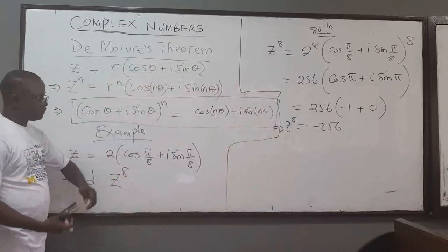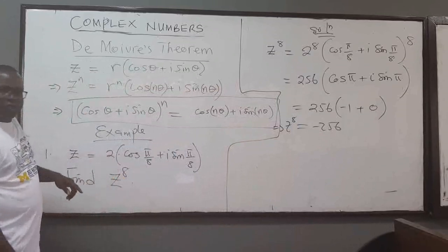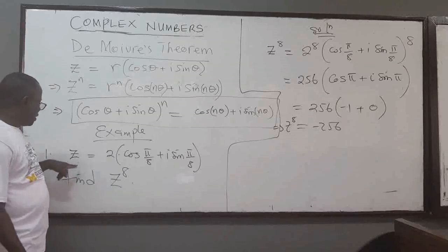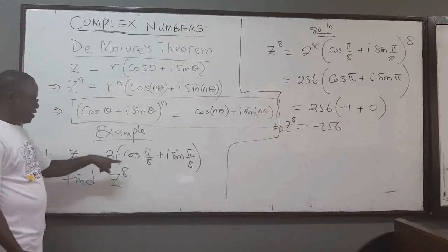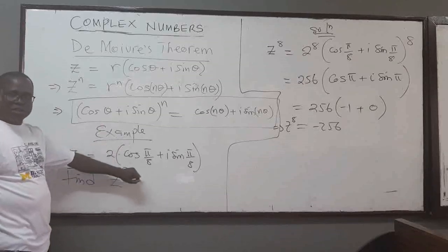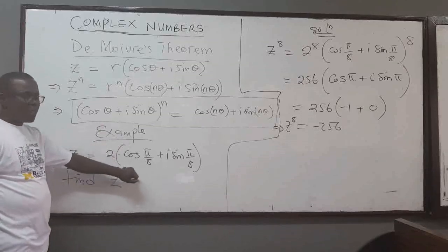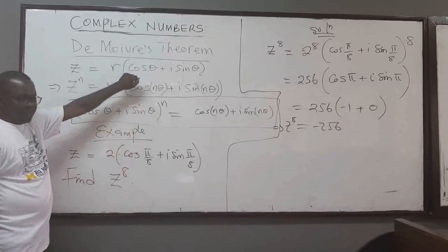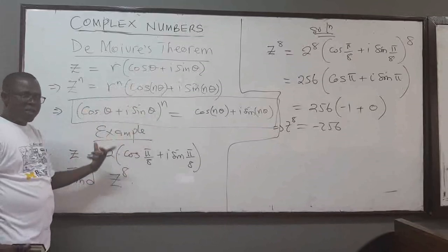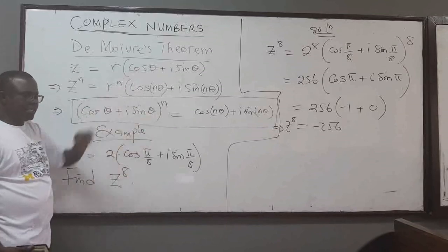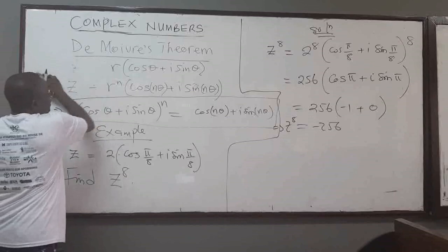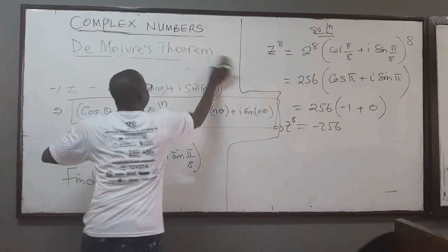Which means that if you are given a complex number which is not in polar form, to apply De Moivre's theorem you need to convert it to polar form first. Then you can easily use it. So let's look at a second example.